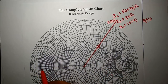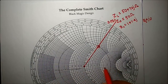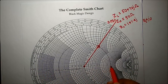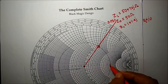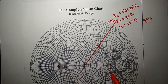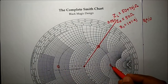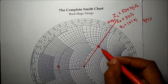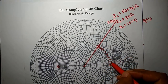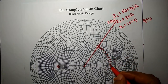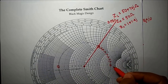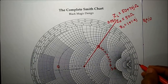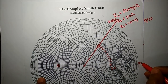This constant VSWR circle cuts the real axis at two points where the impedance is purely real. The first cutting point on the real axis reads 3.6, and the corresponding wavelength value there is 0.25 lambda.